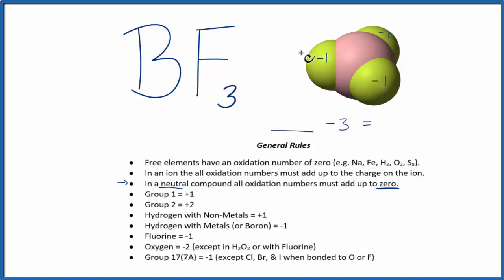And all of this has to add up, including the boron, all has to add up to zero. So some number plus minus three, that gives us zero, and that's a plus three. That would give us zero, and that is the oxidation number on the boron in BF3.